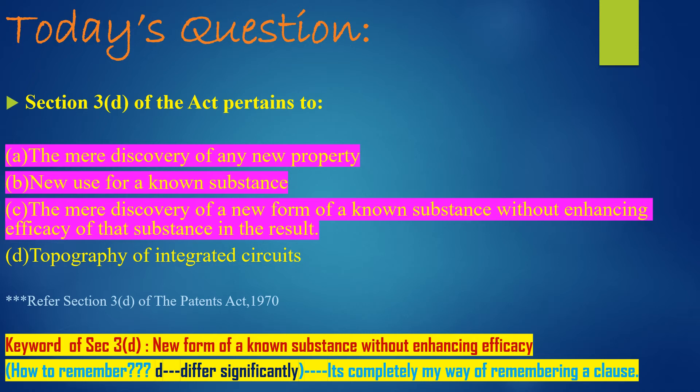But when 2 plus 2 equals 5 — that means efficacy has been improved. It is not mathematically 2 plus 2 equal to 4, but we are getting the result as 5. That means some efficacy has been improved or enhanced. In this situation, that invention can be patented. I hope now it is much more clear.